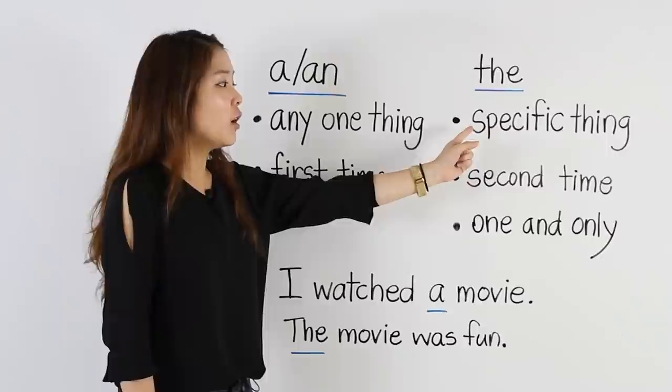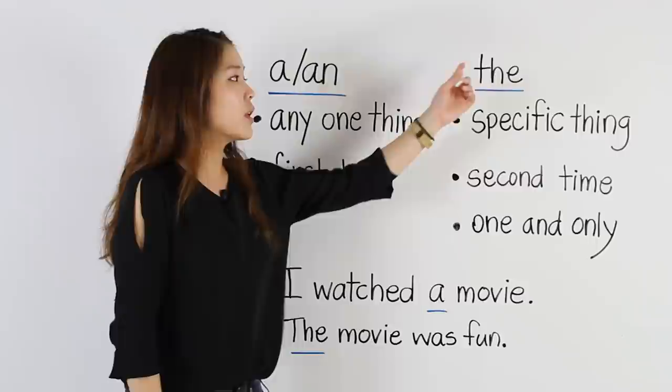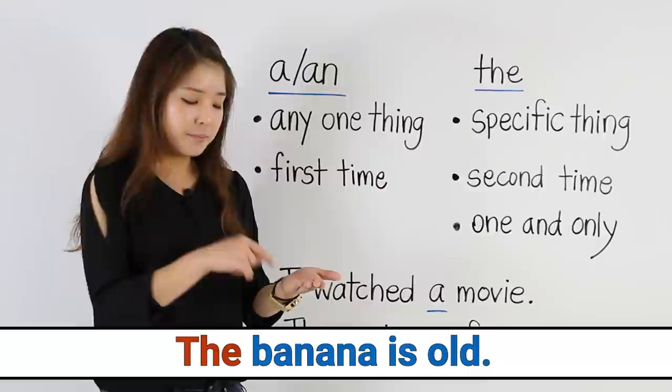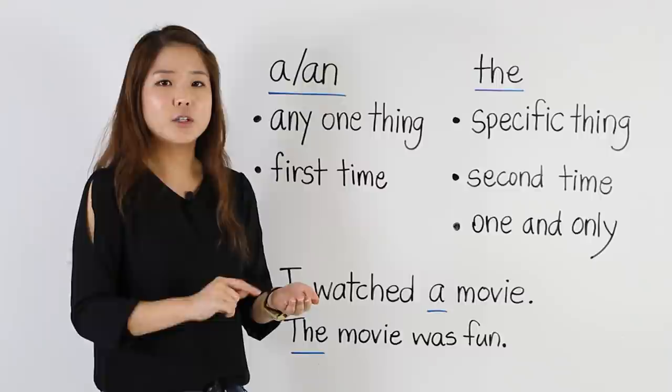If I'm talking about a specific banana, maybe I have a banana in my hand — it's specific, not any banana, this one — I have to use the. The banana is old. I can't say a banana is old, because that means all bananas are old. That's not true. Just this one. So I say, the banana is old.